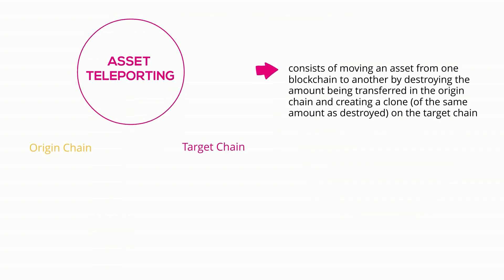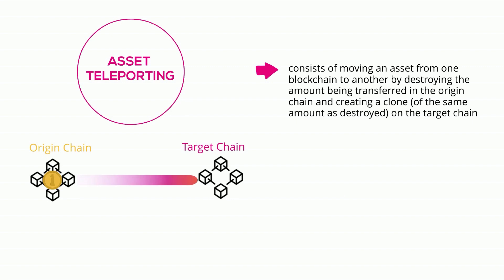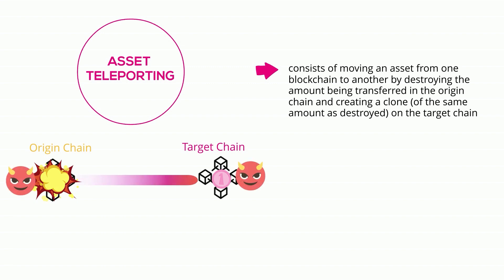Asset teleporting consists of moving an asset from one blockchain to another by destroying the asset being transferred on the origin chain and creating a clone of the same amount on the target chain. In such cases, each chain holds the native asset as reserve, similar to a burn-mint bridging mechanism. This model requires a certain degree of trust, as any of the two chains could maliciously mint more assets.